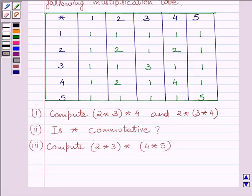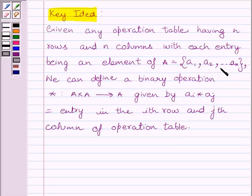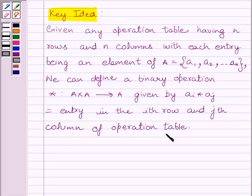First, let us understand the key idea to solve the given question. Given any operation table having n rows and n columns with each entry being an element of set A = {a1, a2, ..., an}, we can define a binary operation star from A cross A to A, given by ai star aj, which is equal to the entry in the ith row and jth column of the operation table.